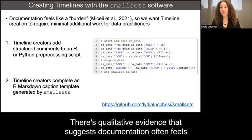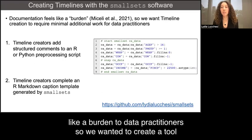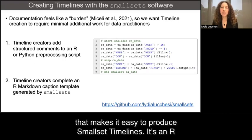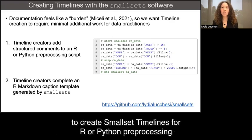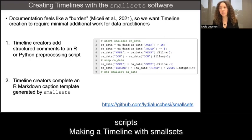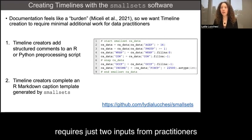And finally, the small set software. There's qualitative evidence that suggests documentation often feels like a burden to data practitioners. So we wanted to create a tool that makes it easy to produce small set timelines. It's an R package that can be integrated into new or existing pre-processing workflows to create small set timelines for R or Python pre-processing scripts. Making a timeline with small sets requires just two inputs from practitioners.